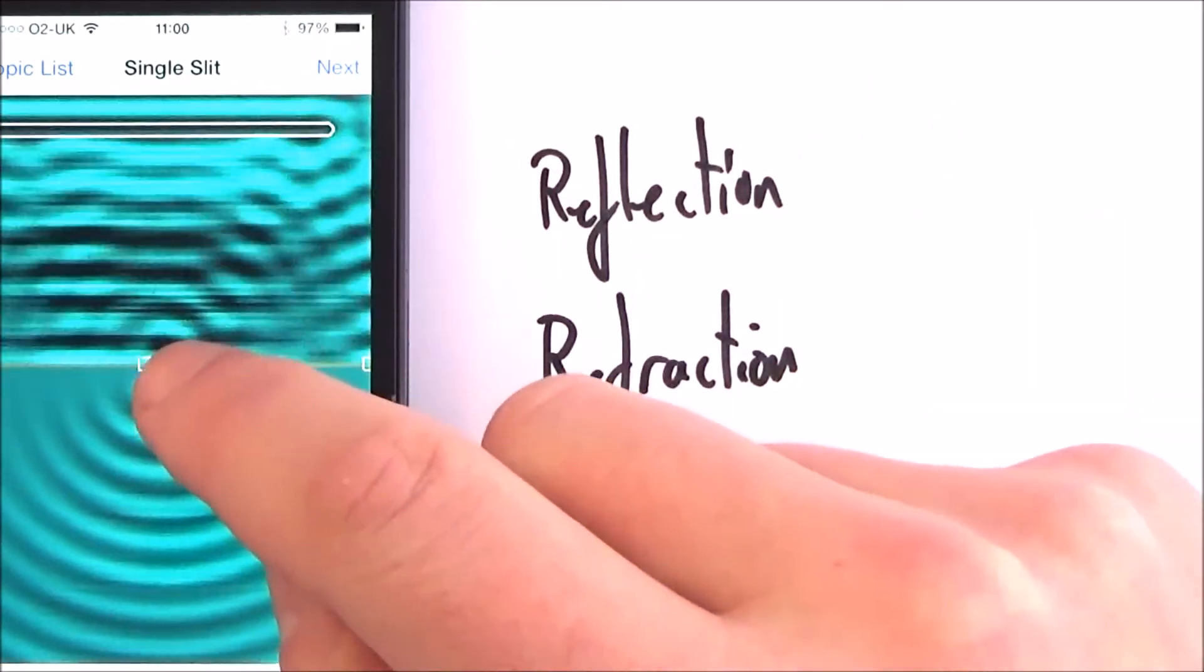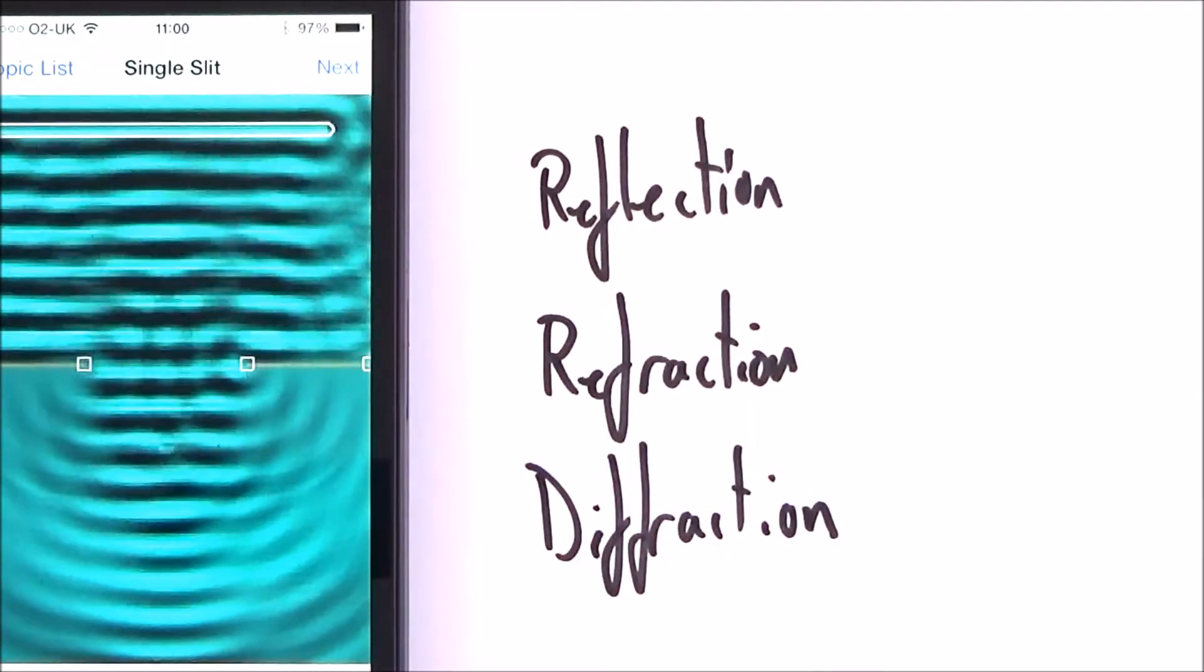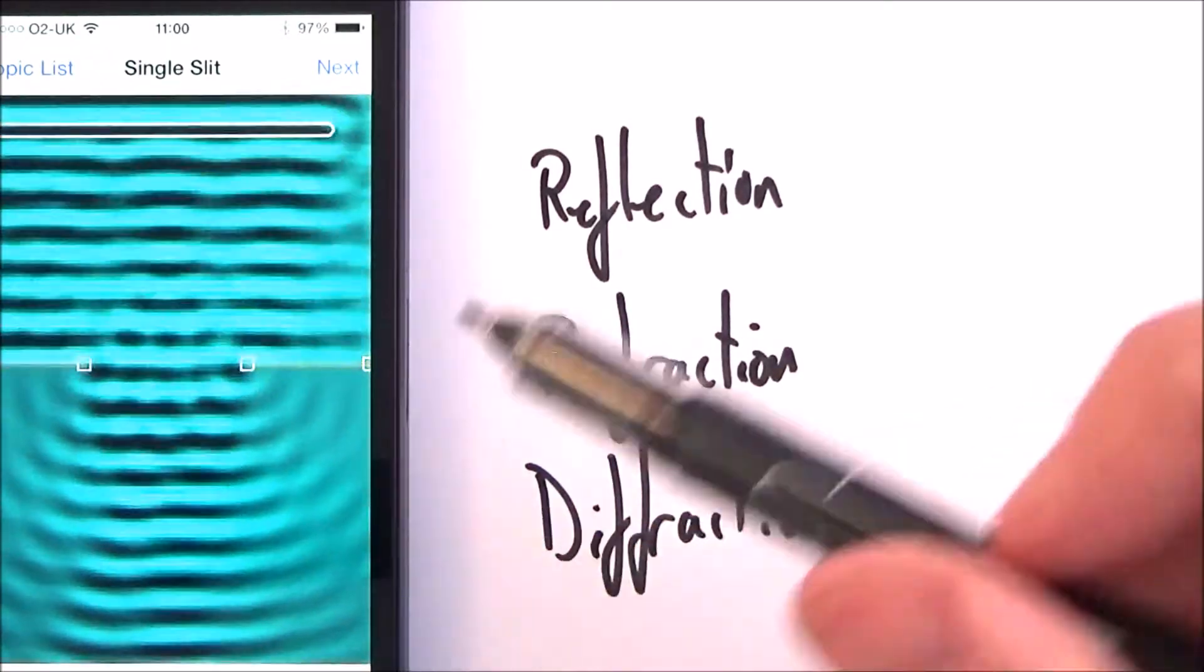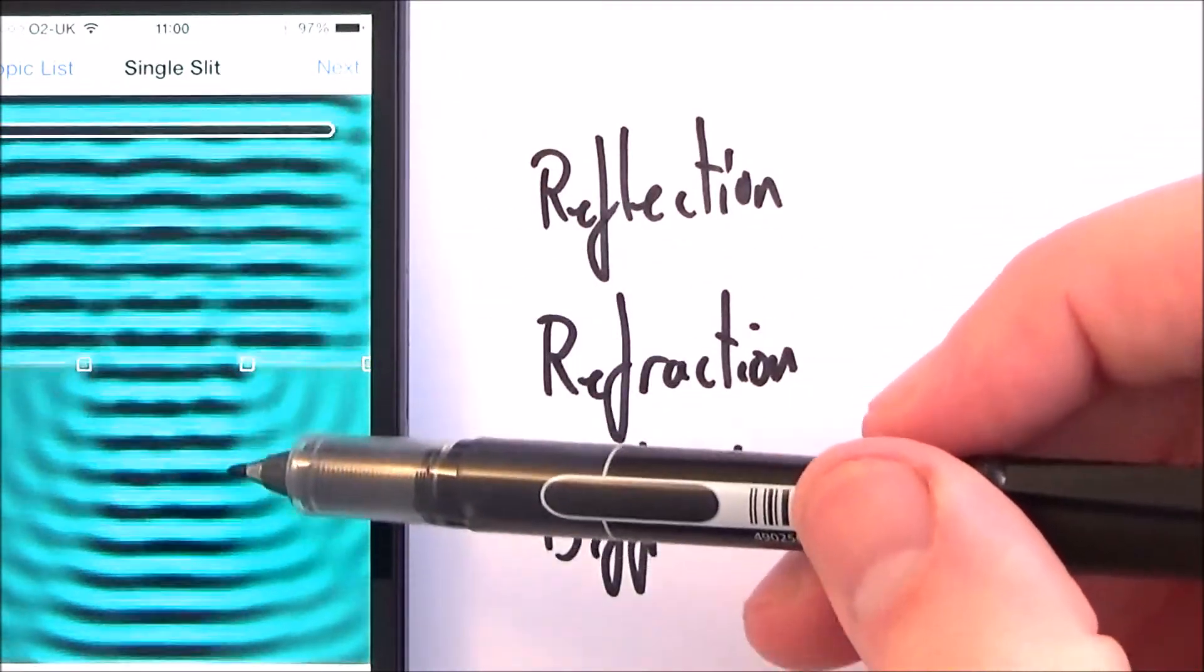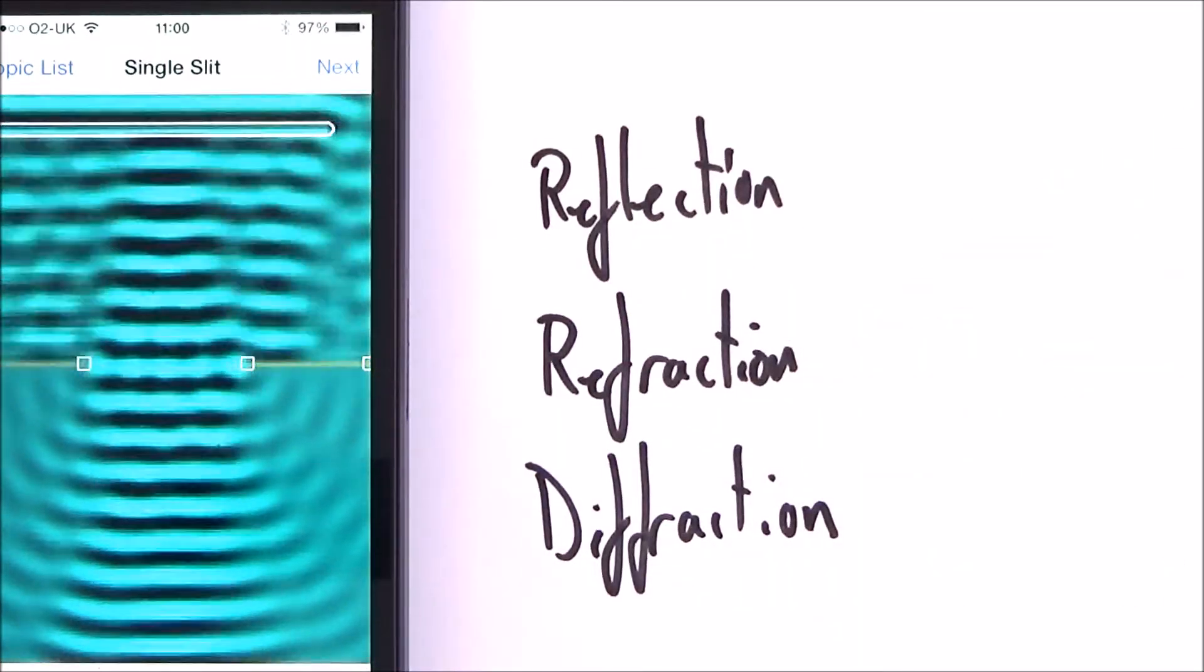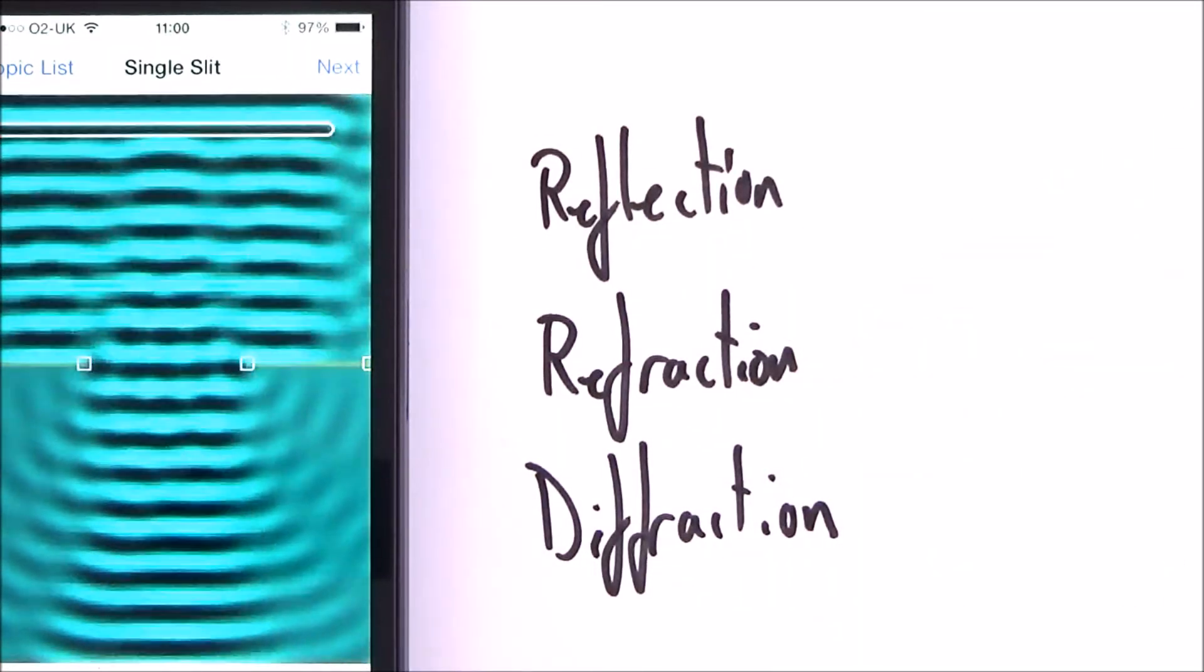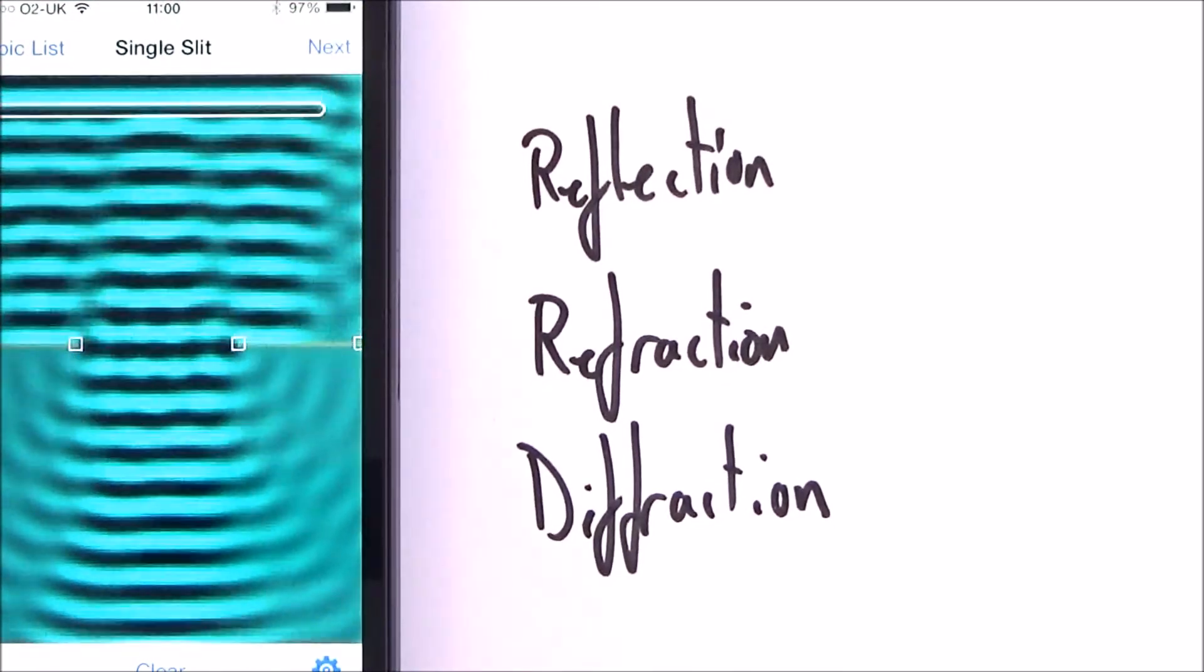Now the great thing about this app is that you can do loads of things. You can change the frequency, you can change the wavelength. If I make that gap a little bit wider, so now the gap is a lot wider than the wavelength, then the waves don't spread out as much. And this is really important. That's the reason that sound does diffract through an opening, so you can hear people around the door, but light doesn't, because the wavelength of light is so much smaller than the gap it's gone through.